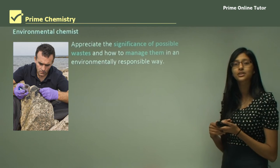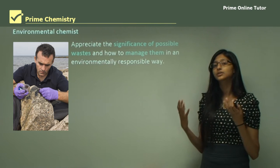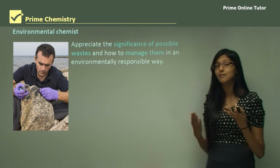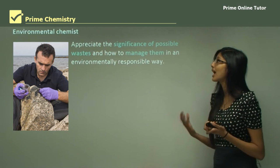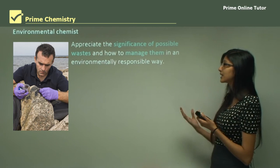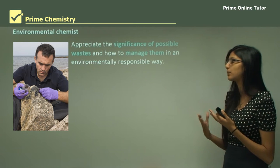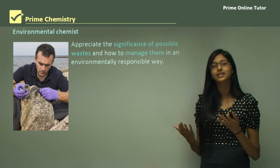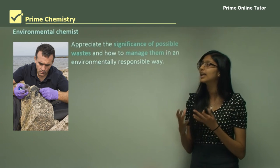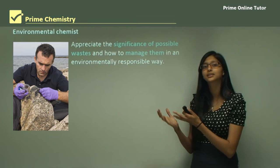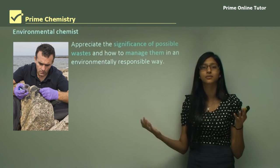An environmental chemist looks at the different chemicals involved in the environment, such as pollutants in air, water, and soil. They assess the significance of possible waste and how to manage it in an environmentally responsible way. For example, if a reaction produces a lot of waste, an environmental chemist will determine how to dispose of it properly so it doesn't harm other ecosystems.